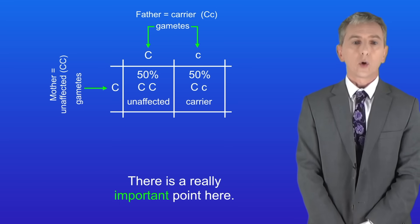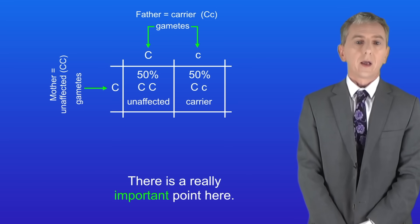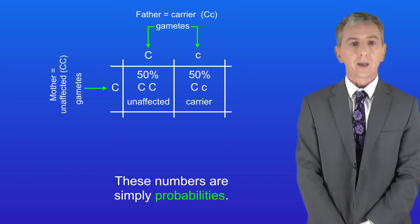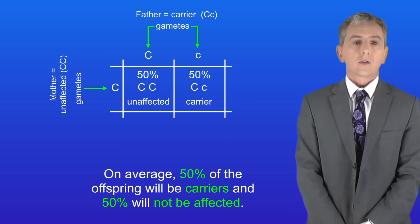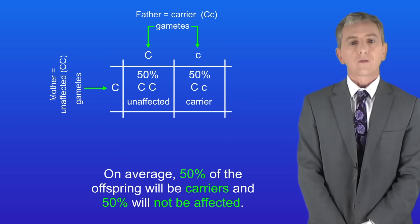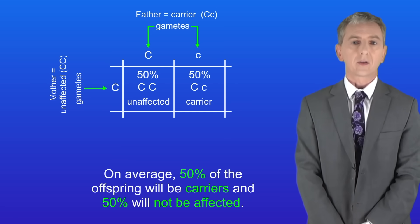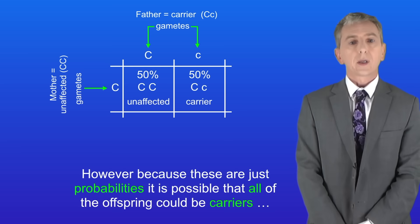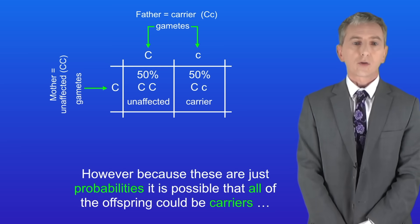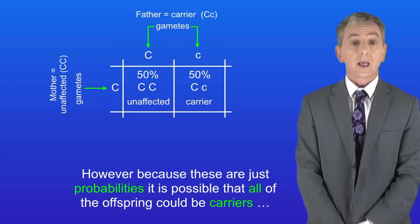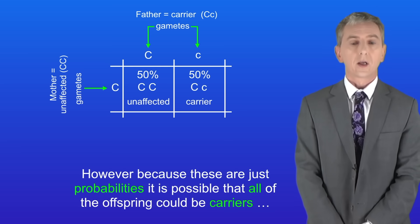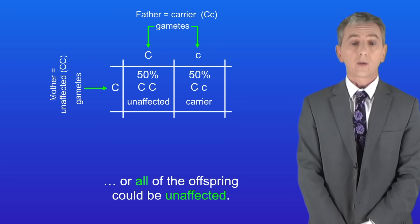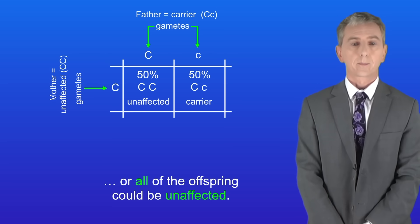There is a really important point here: these numbers are simply probabilities. So on average 50% of the offspring will be carriers and 50% will not be affected. However because these are just probabilities, it's possible that all of the offspring could be carriers or all of the offspring could be unaffected.